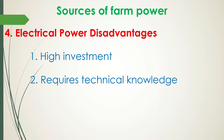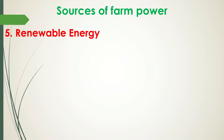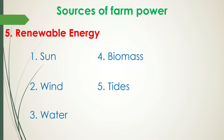Finally, the last source of farm power is renewable energy. Renewable energy is energy generated from natural processes that are continuously replenished, which means they are energy sources that are virtually unlimited or constantly renewed. This includes sun, wind, water, biomass, tides, and geothermal heat.